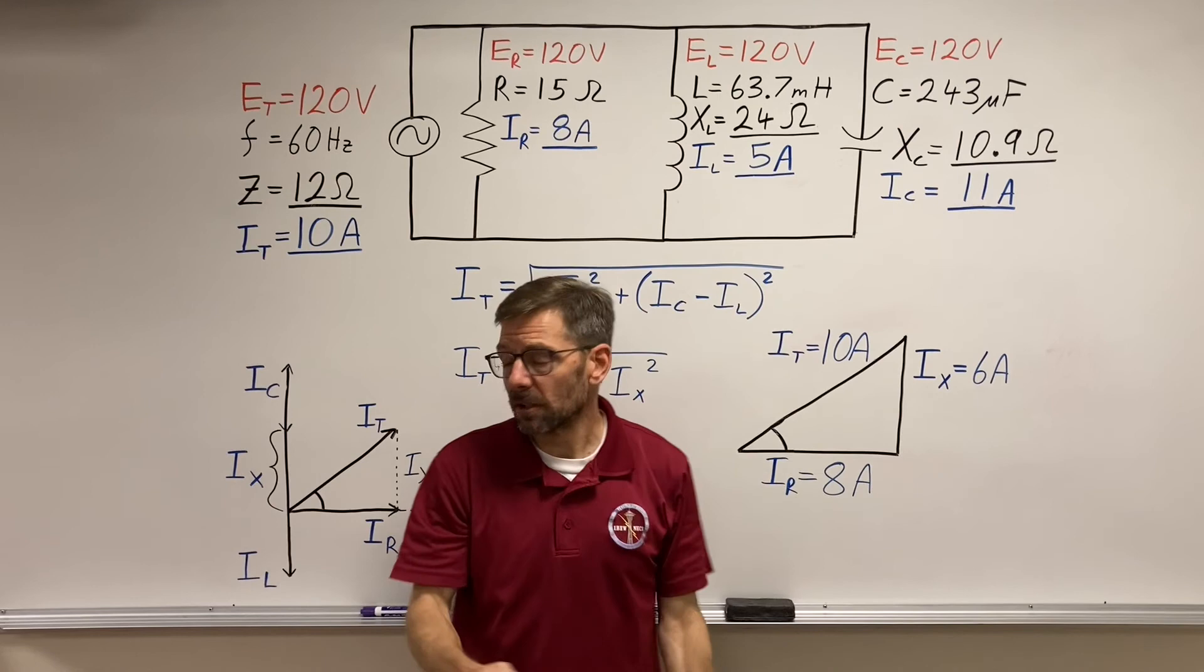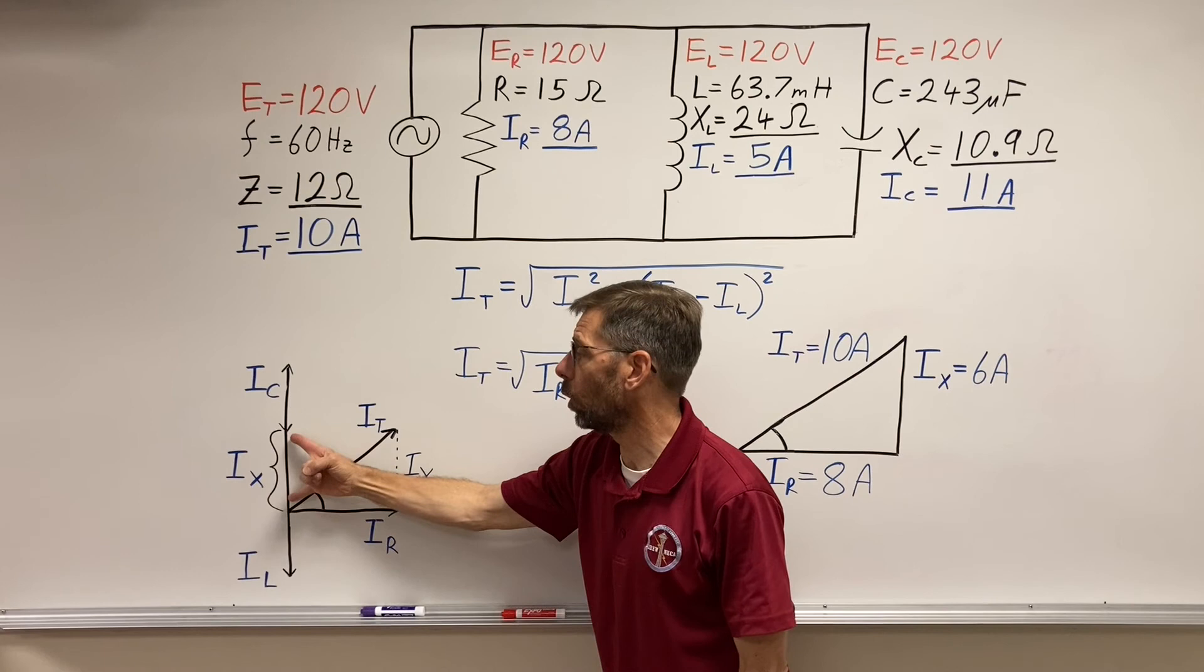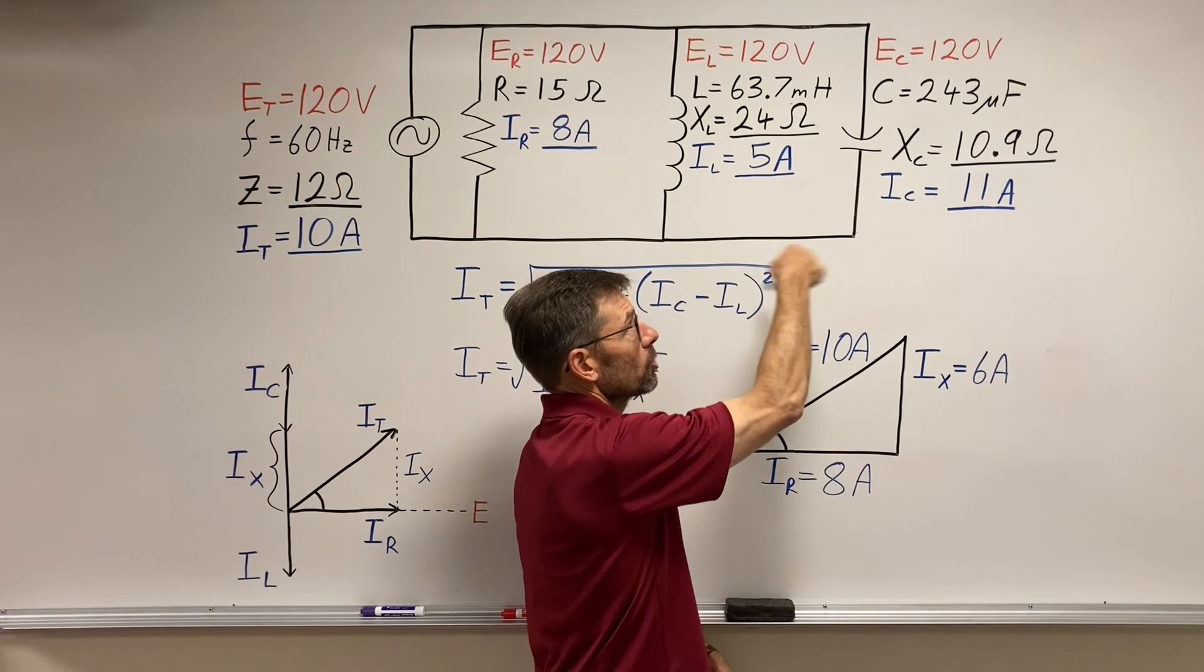Total current will always be equal to or greater than the resistive current and or the net reactive current. These two play off each other. They could be trading back and forward 300 amps for all we care. It's what the circuit has to provide that we ultimately care about in our calculations.